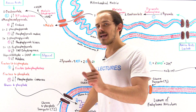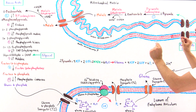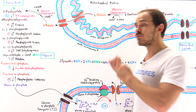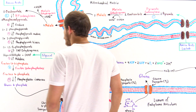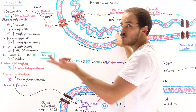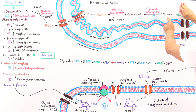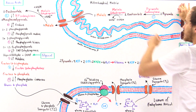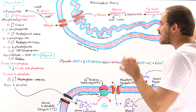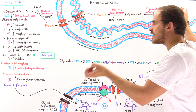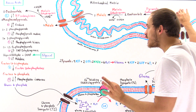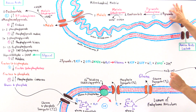Step number one of gluconeogenesis takes place within the matrix of the mitochondrion, because the enzyme that catalyzes step one is found there. We have the outer membrane and inner membrane of the mitochondrion, with the intermembrane space between them, and the matrix inside. A pyruvate molecule is transformed into an oxaloacetate intermediate, catalyzed by pyruvate carboxylase. This enzyme hydrolyzes an ATP molecule and uses that energy to drive the carboxylation of pyruvate into oxaloacetate — essentially attaching a carbon dioxide onto the pyruvate to form oxaloacetate.